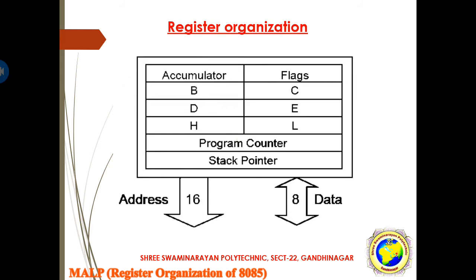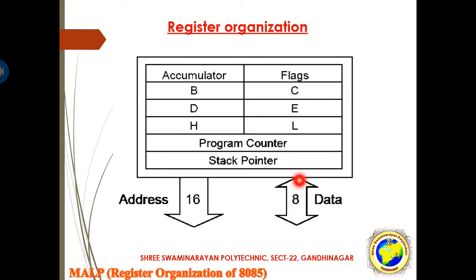Here are the pictures of register organization. Different registers are there: accumulator, flag, B, C, D, E, H, L, program counter, and stack pointer. Here the address is 16-bit and data is 8-bit. The address line is 16-bit, and data is 8-bit. The two-sided arrow means bi-directional and the single arrow means unidirectional. So the address bus is unidirectional, 16-bit or 16 lines, and the data bus is bi-directional, 8-bit or 8 lines.